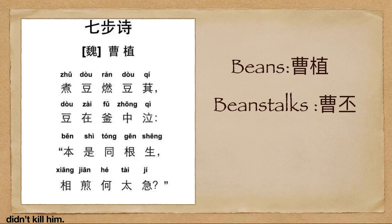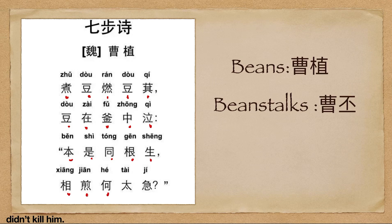Now let's read this poem again. 煮豆燃豆萁，豆在釜中泣，本是同根生，相煎何太急。七步诗，曹植。